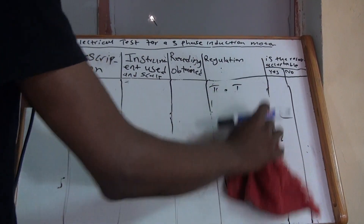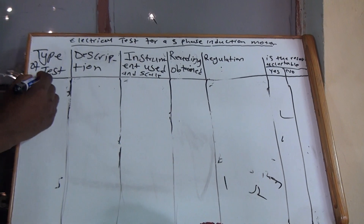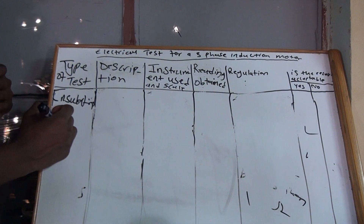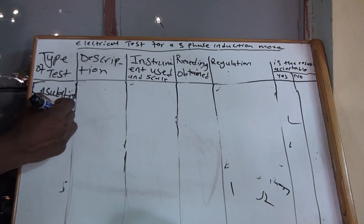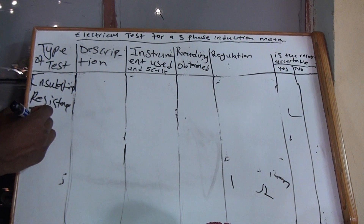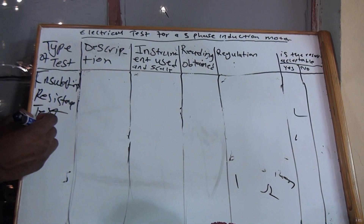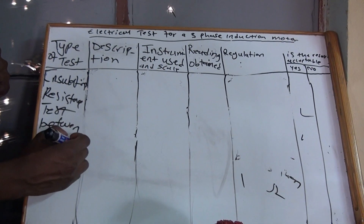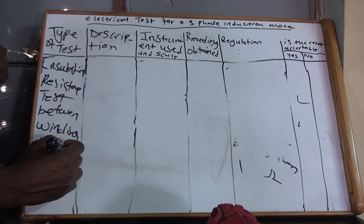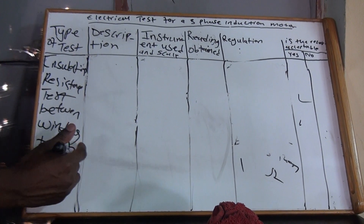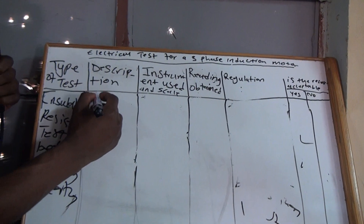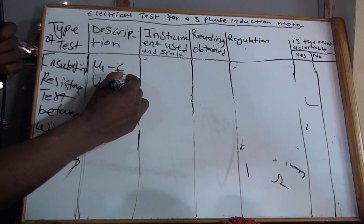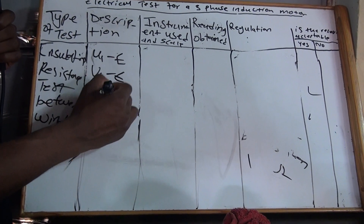The last test is the insulation resistance test between windings and the frame (F). On the description you'll write U1 and F, V1 and F, and W1 and F.